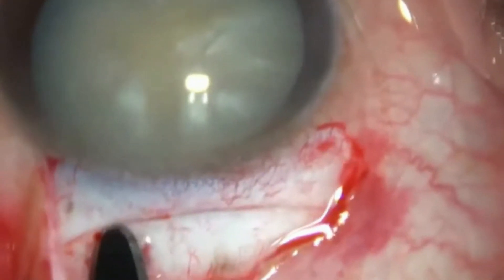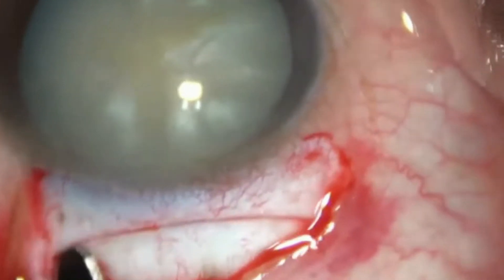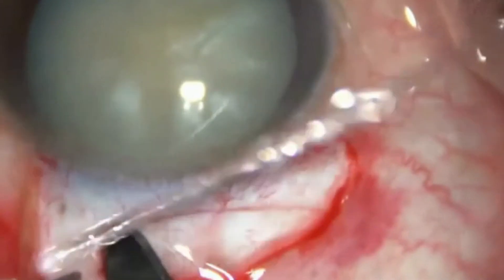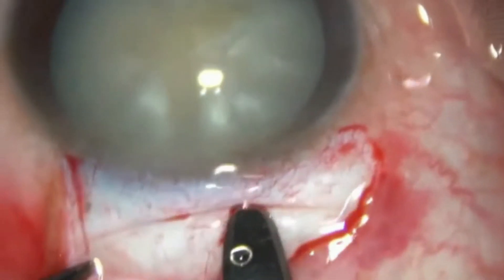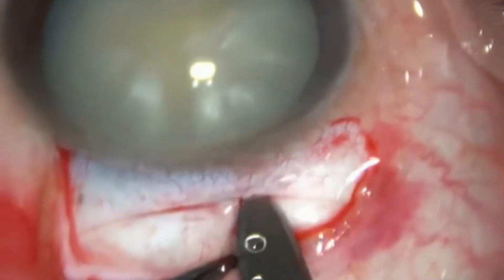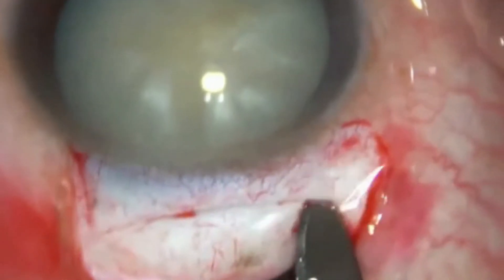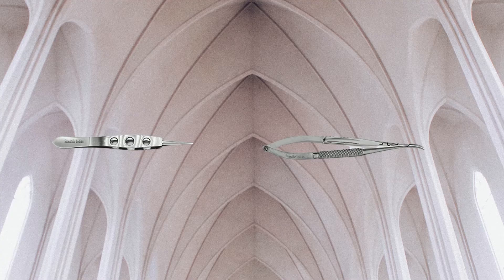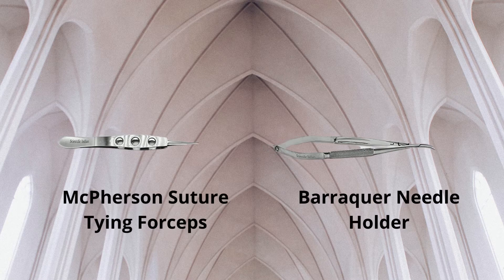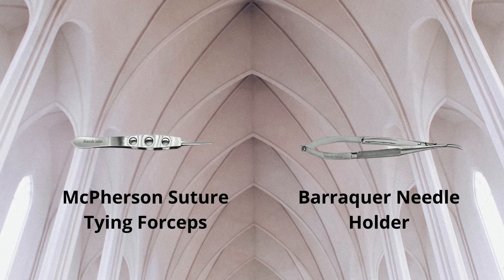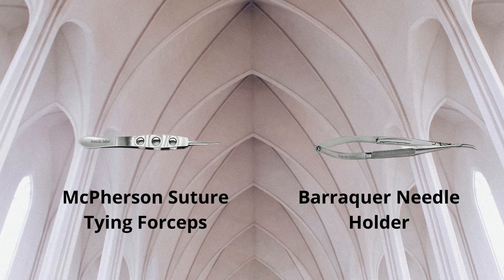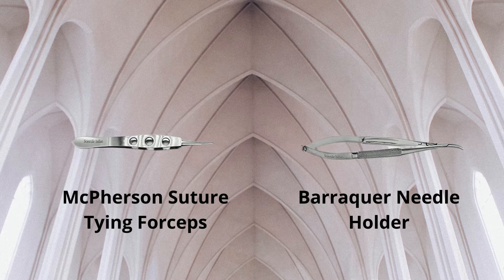However, a large tunnel need not be a problem. Even larger tunnels are self-sealing and don't need suturing if they are prepared correctly. If there is doubt about the self-sealing effect, the surgeon may apply one or two sutures at the end of surgery. McPherson suture tying forceps and Barraquer needle holder are used for suturing with 10-0 nylon suture, which, if correctly tied, will also reduce any induced astigmatism.